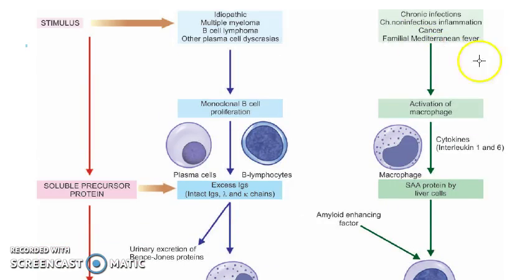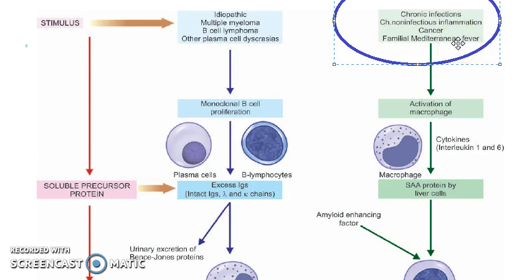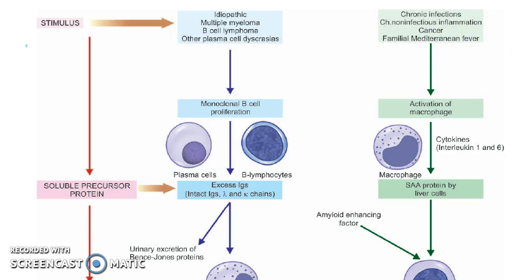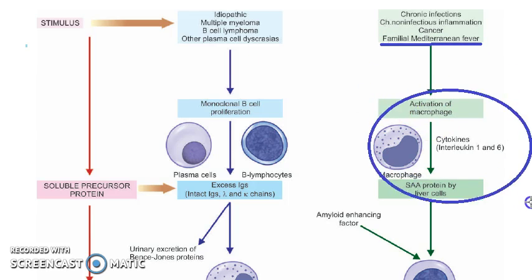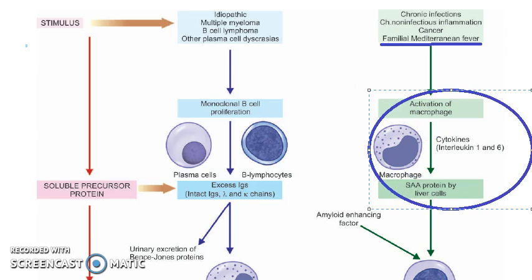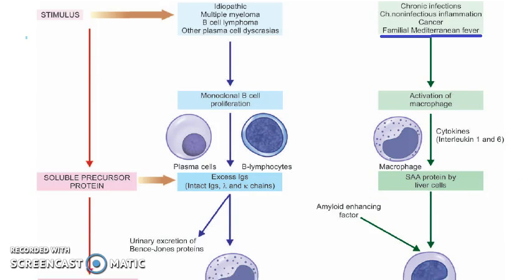Now coming back, we are going to look at the AA one. There are chronic inflammations and cancer, and familial Mediterranean fever. These are going to activate the macrophages.